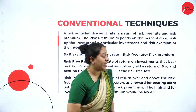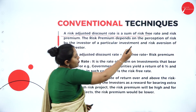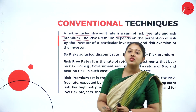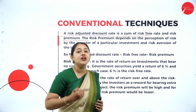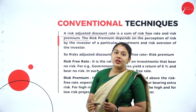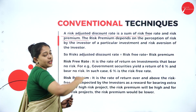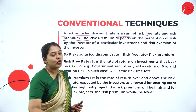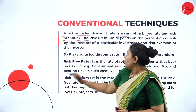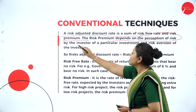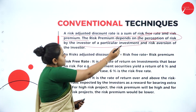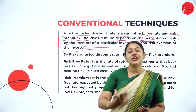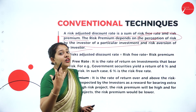Risk adjusted discount rate is the sum of the risk free rate plus the risk premium. To calculate it, simply add the risk free rate (given in the question) and the risk premium (also given in the question). The risk premium depends on the investor's perception of the risk of a particular investment and their risk aversion.